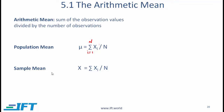A sample mean is generally denoted by x-bar. The method is exactly the same — you go from 1 to n, sum up all the observations in the sample, and then divide by the number of observations in the sample.